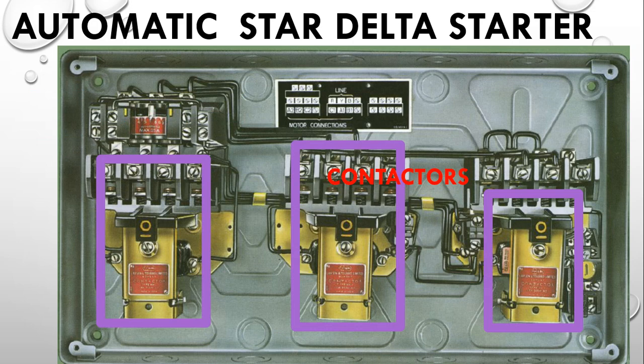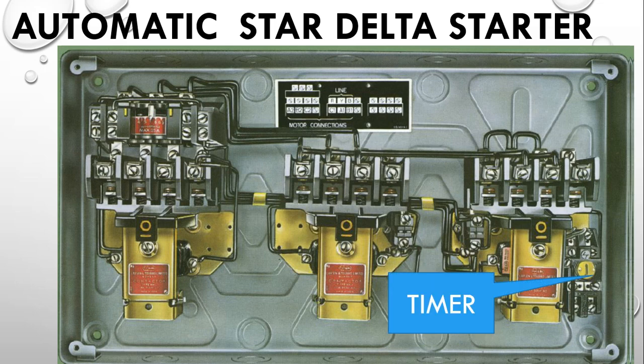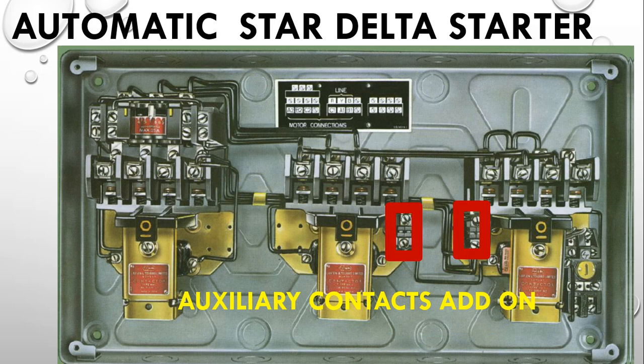The main difference is that this automatic star delta starter has a timer. This timer can be used to set the time when the motor has to change from star to delta. You just press the start button once and release — after the set timing it will automatically shift to delta. Additionally, the contactor has auxiliary contacts, and these add-on blocks provide additional NC or NO contacts beyond the standard four contacts (three power contacts and one auxiliary).